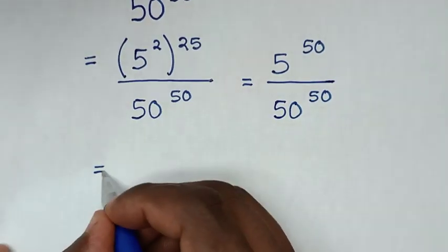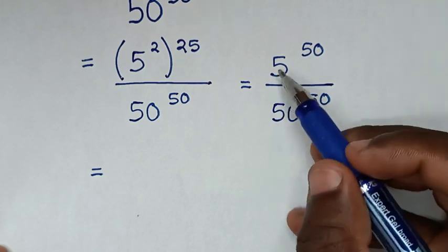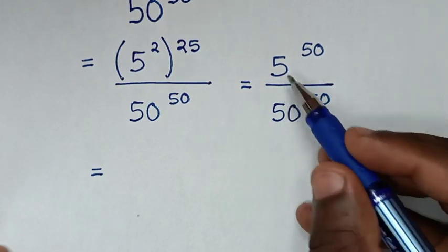Then in the next step it will be equal to, from here we have the same power of 50, so we'll divide these bases. It will be 5 over 50, then bracket same power of 50.